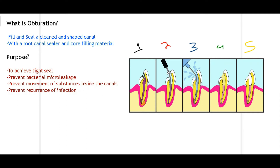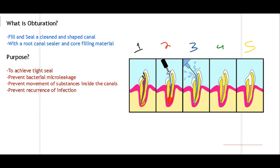Obturation is a technique used after we have performed pulpectomy — for example, when a patient had symptomatic irreversible pulpitis, we diagnose it, remove all the pulp tissue from the tooth, then perform cleaning and shaping. After the canal is properly shaped and the pulp is removed, we perform obturation by inserting inert material into the empty spaces, placing root canal sealer and a core filling material, and finally placing a restoration on top of the tooth.